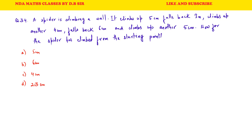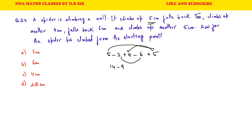Question 34: A spider climbs a wall — it climbs up 5 cm, falls back 3 cm, climbs up another 4 cm, falls back 6 cm, and climbs up another 5 cm. How far has the spider climbed from the starting point? Using integers: 5 − 3 + 4 − 6 + 5 = 5 + 5 + 4 − 9 = 14 − 9 = 5... wait, that gives 5 cm. Actually 5 + 4 + 5 = 14 minus (3 + 6) = 9, so 14 − 9 = 5... B is the correct answer at 6 cm.